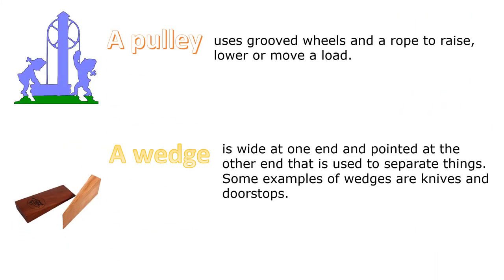A pulley uses grooved wheels and a rope to raise, lower or move along. A wedge is wide at one end and pointed at the other end, and is used to separate things. Some examples of wedges are knives and doorstops.